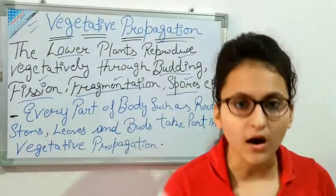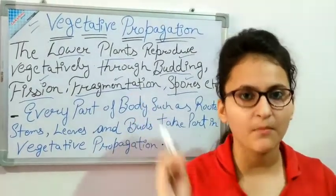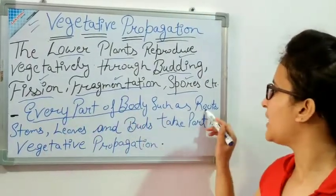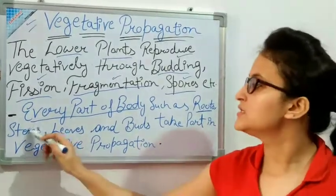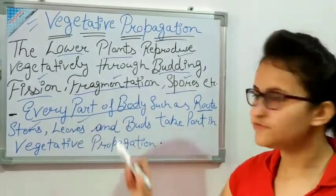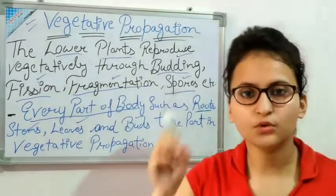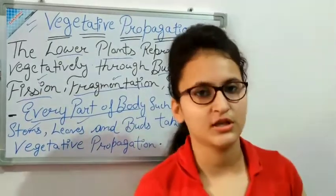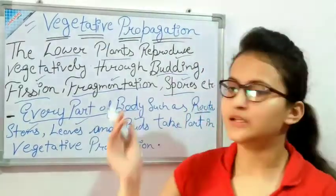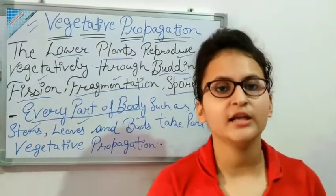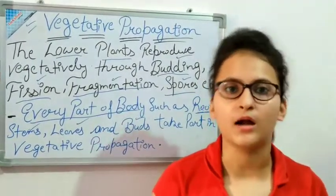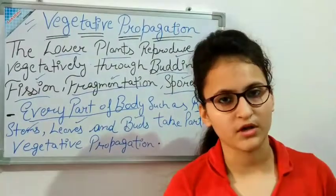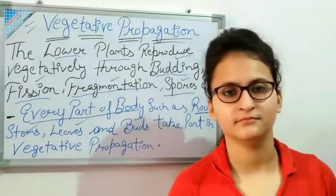Every part of the body can be used. I have told you that we can use roots, stems, leaves, and buds — they will all take part in vegetative reproduction.